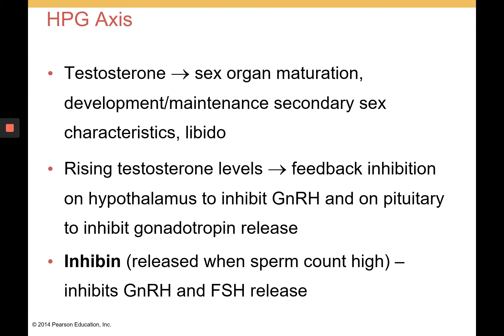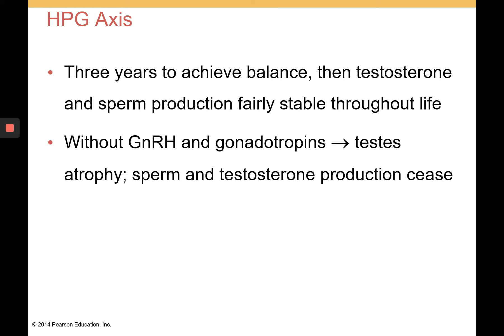Testosterone is a male androgen responsible for sex organ maturation, development and maintenance of secondary sex characteristics, and male libido. Rising testosterone levels negatively feed back to the hypothalamus to inhibit GnRH release, and act on the anterior pituitary to inhibit its action in the HPG axis. Inhibin is also released when sperm count is high; it inhibits both GnRH and FSH release. It takes about three years to achieve balance in the HPG axis, after which testosterone production remains fairly stable throughout the male's life. Without GnRH, FSH, and LH, the testes would atrophy and sperm and testosterone production would cease.